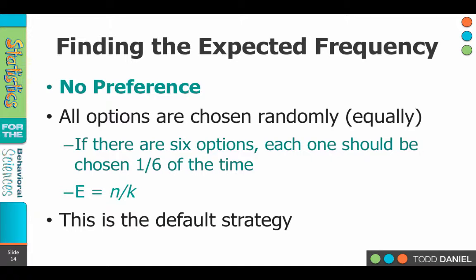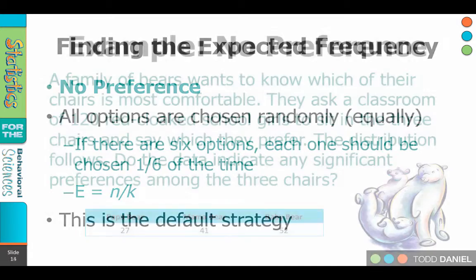So we could make it simple and say if there's six types of soft drinks, then each type of drink should be chosen one-sixth of the time. That's if everything is occurring randomly. Now to put that into mathematics, the E, the expected value, is n divided by k. So we would take the total number of people choosing, divide by six, that's how many people should choose each type of soft drink each time around. Now this is the default strategy for a chi-square.